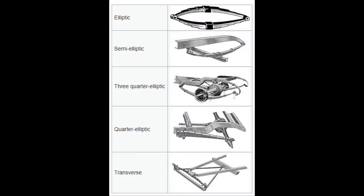There are different types of leaf springs: elliptical, semi-elliptical, three-quarter elliptic, quarter elliptic, and transverse types. Mostly we can see semi-elliptical leaf springs in use.